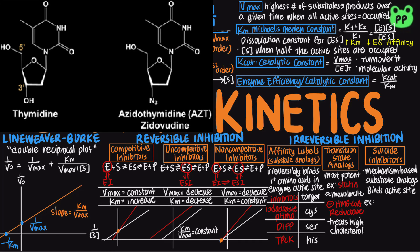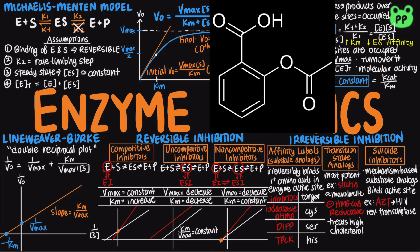For example, azidothymidine, or AZT, is a suicide inhibitor of reverse transcriptase designed to treat HIV. Aspirin is a suicide inhibitor of cyclooxygenase 1 and 2, which lowers eicosanoid production and treats inflammation. More examples of drug design as enzyme inhibitors will be covered in a future video.